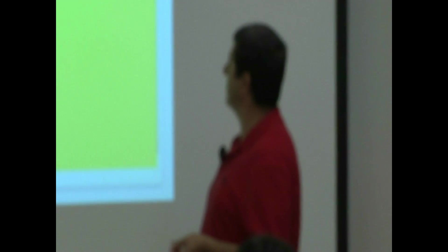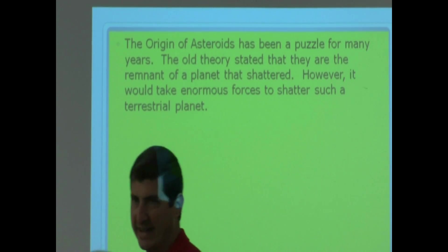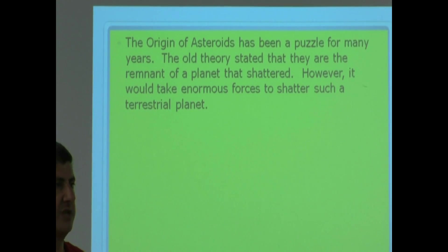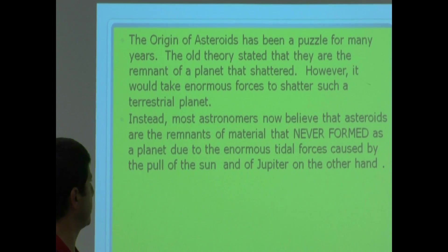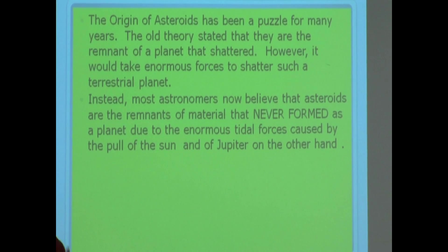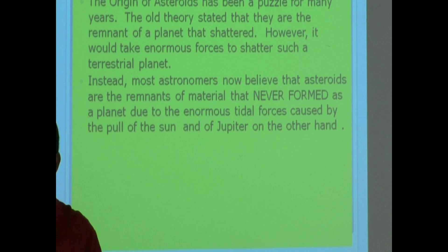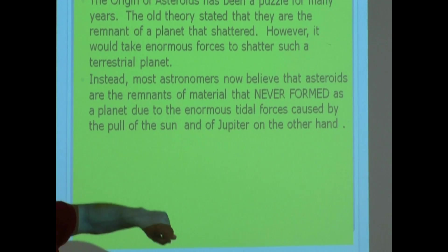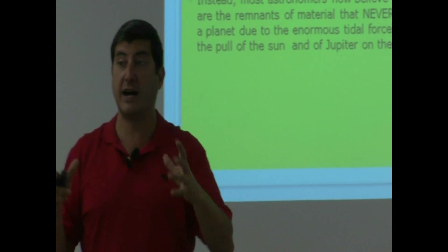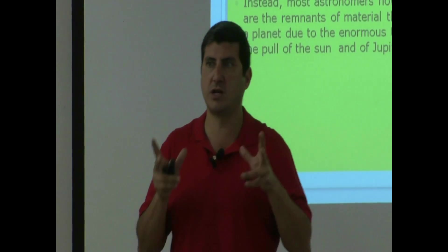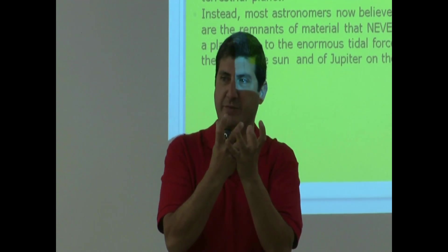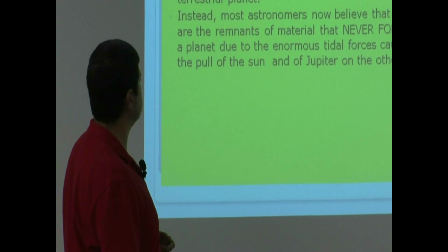The origin of asteroids has been a puzzle for many years. The old theory stated that they are the remnant of a planet that used to exist there but shattered. However, it would take enormous forces to shatter such a terrestrial planet. So, that theory has been abandoned. Instead, most astronomers now believe that asteroids are the remnants of a material that never formed. They never formed there. It never formed as a planet. It just stayed as small, rocky objects. As a planet, due to the enormous tidal forces caused by the pull of the sun and of Jupiter, on the other hand. So, the sun's pull on one hand, Jupiter's pull on the other, never allowed the planet to form there. That's the theory. So, there never was a planet there. Jupiter was the culprit. It didn't allow gravitational forces to cause a planet to exist. Jupiter's gravity kept tugging at it.